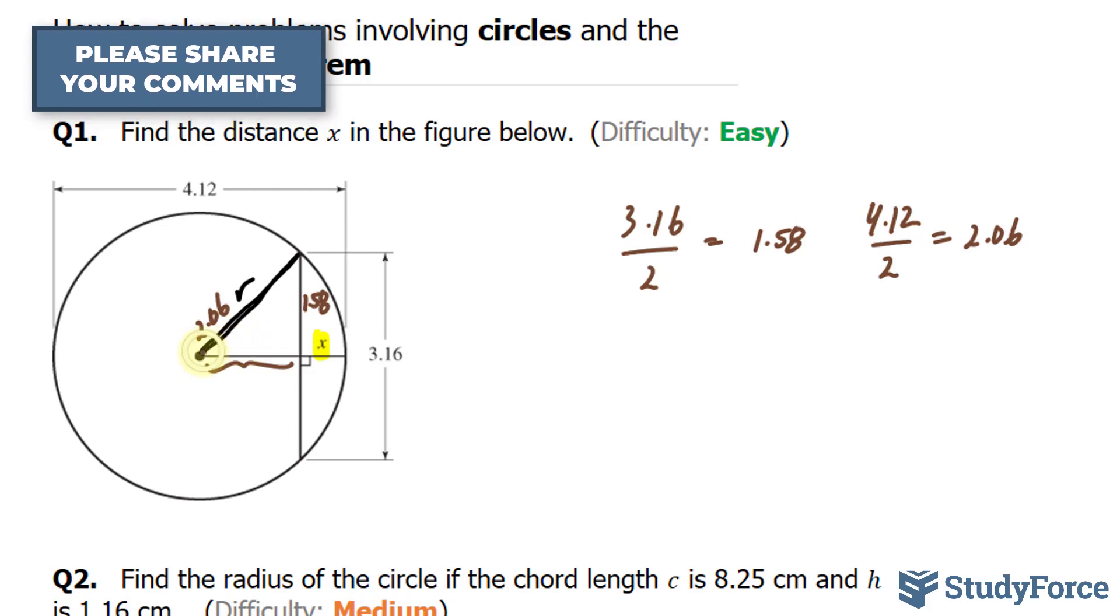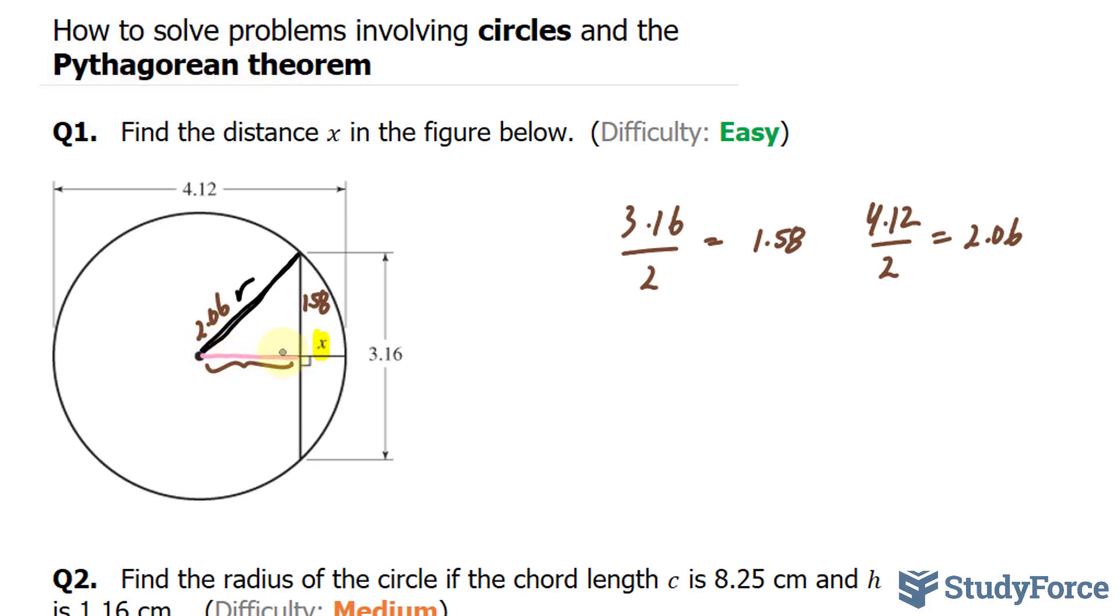Now I'll use the Pythagorean theorem to find out the length from here to here. And the reason why I'm finding the length from here to here is so that I can eventually subtract that number from the radius, and that will give me what's remaining, which is x.